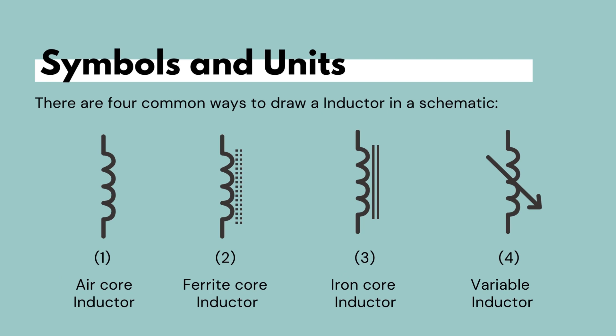There are four common ways to draw an inductor in a circuit schematic: the air core inductor, which has air as its core; the ferrite core inductor; the iron core inductor; and the variable inductor. Air core inductors are used when the amount of inductance required is low, and iron core inductors are made with an iron core and usually have high power and high inductance values. You can keep these symbols as reference when looking at different schematics containing different types of inductors.